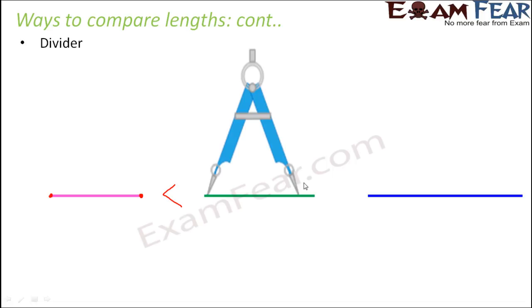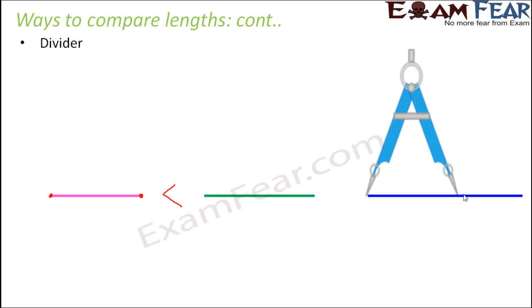Because in this case, the opening of the divider is smaller. Now if you place the same divider on the third line segment, here you see that the opening of the divider could cover almost half of the line segment. So the remaining half was not covered. That means the blue line segment is even longer than the green one. So in this fashion, using a divider also you can compare lengths of multiple line segments.